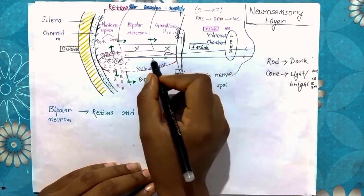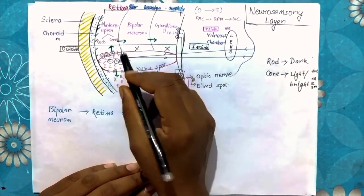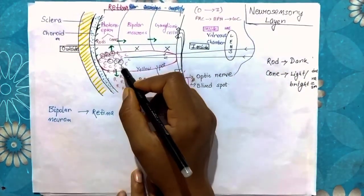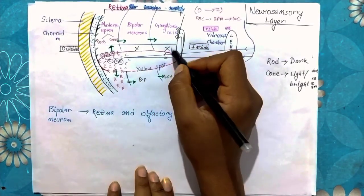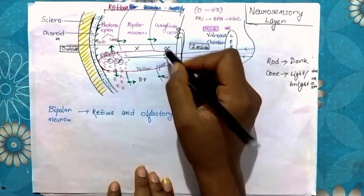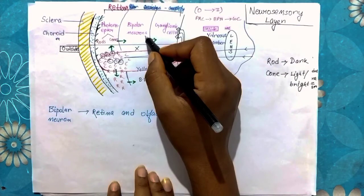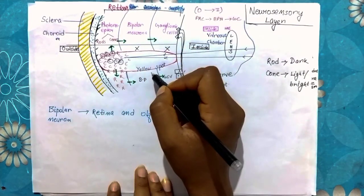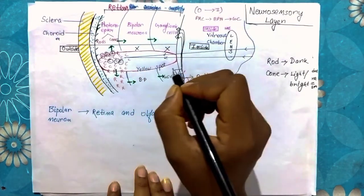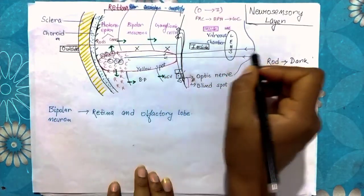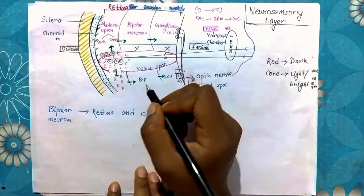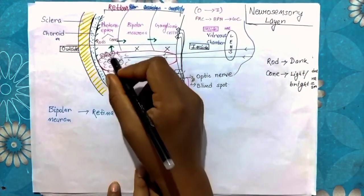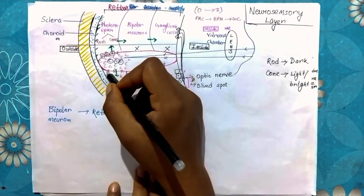So if the light falls here, it falls directly into the photoreceptor cells, because in the ganglionic cells and the bipolar neurons, the yellow spot is absent. If the yellow spot is absent, it means the light falls directly into the photoreceptor cells and the image will form.